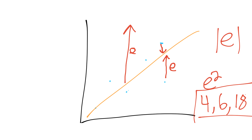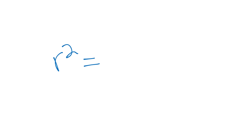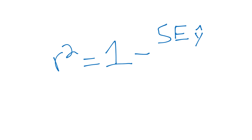Now, how do we calculate the coefficient of determination, or R squared? R squared equals one minus the squared error — generally denoted as SE — of the y-hat line, divided by the squared error of the mean of the y's. The y-hat line is your best fit regression line, and the denominator uses the squared error of the mean of your y values in the data set.